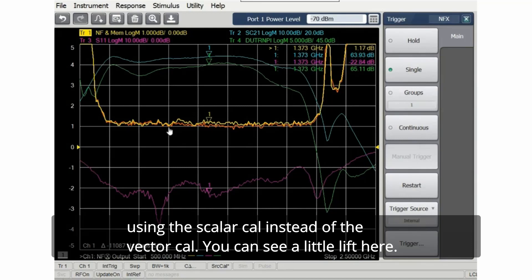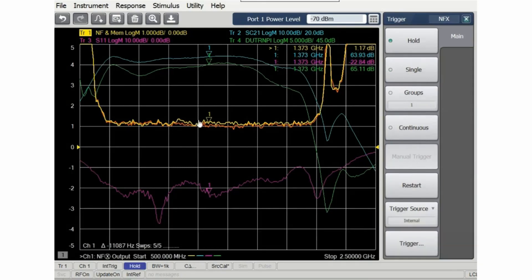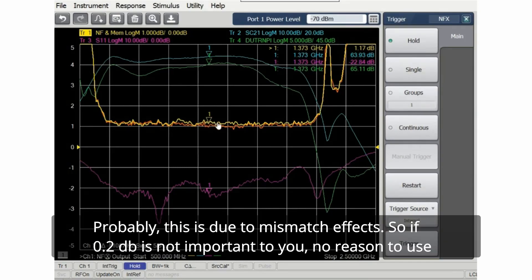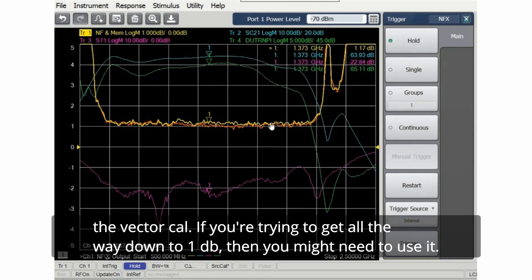We can see a little lift here, probably this is due to mismatch effects. So if 0.2 dB is not important to you, no reason to use the vector cal. If you're trying to get all the way down to 1 dB then you might need to use it.